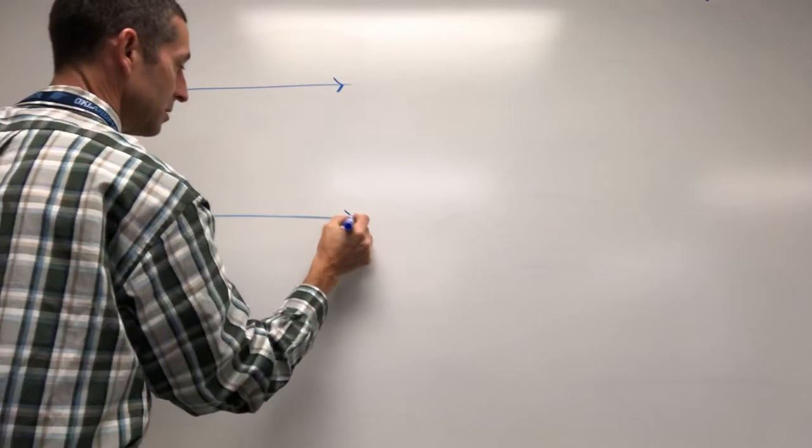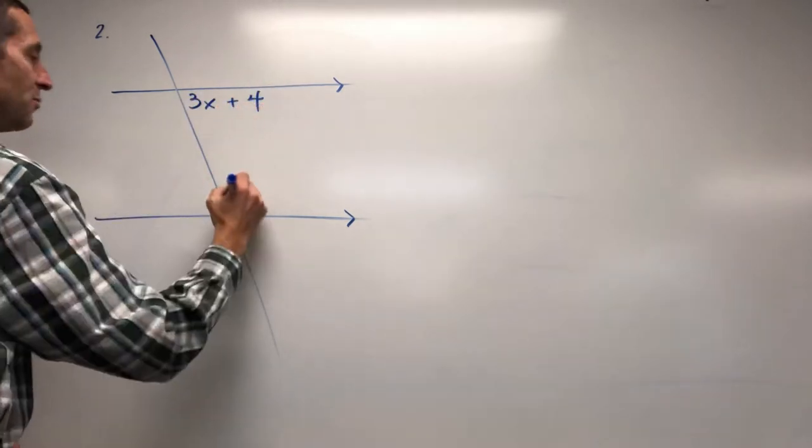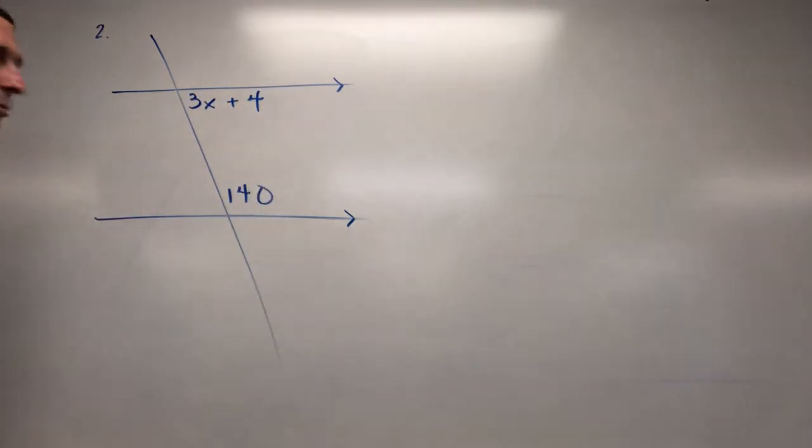Alright, let's go a similar setup. Let's go two lines. Let's mark them as parallel. We have our third line. The transversal cuts through there. Let's get an algebra expression here. 3x plus 4. Let's make that angle 140.